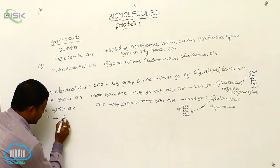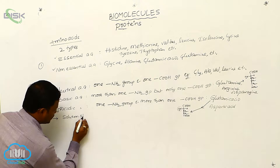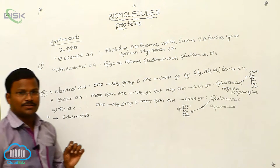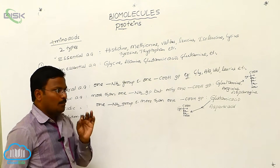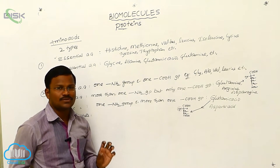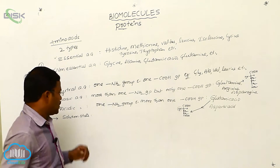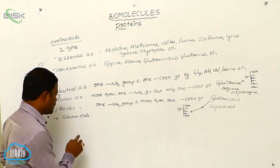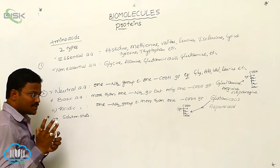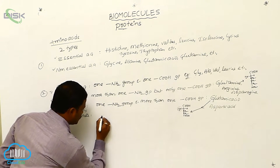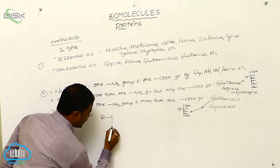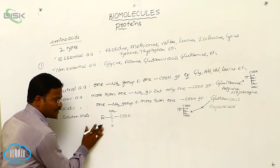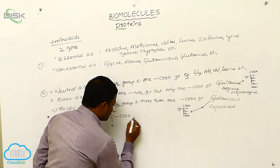In solution state, all amino acids are polar in nature. Polar chemical substances can easily dissolve in water because water is also a polar solvent. Due to this, when amino acids are added to water, they dissolve and the resulting state is called solution state. The general representation of an amino acid is: R-CH(NH2)-COOH.